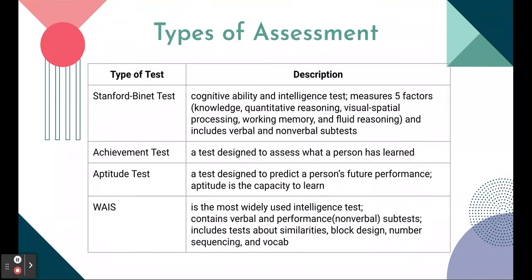There are different types of intelligence tests. The Stanford-Binet assesses cognitive ability and intelligence, measuring five factors: knowledge, quantitative reasoning, visual-spatial processing, working memory, and fluid reasoning, with verbal and non-verbal subtests. An achievement test is designed to assess what a person has learned — like a unit test. You take achievement tests in school all the time. The Regents is an achievement test. An aptitude test is designed to predict future performance — aptitude is the capacity to learn.